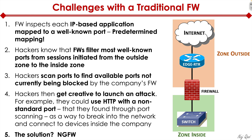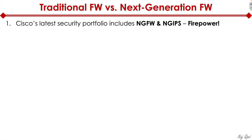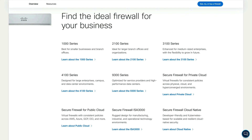What's the solution? Next-generation firewall. Cisco's latest security portfolio includes next-generation firewall, next-generation IPS, and a product called Firepower. You can buy it as a physical appliance or as a virtual appliance in AWS, Azure, or GCP.